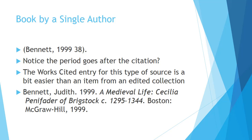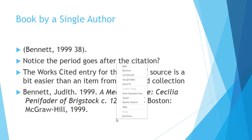The works cited entry for this type of source is a lot easier than for an item in an edited collection because there's only one author to deal with. So the works cited entry will look like this: Bennett, Judith — the author. Then the title in italics: A Medieval Life: Cecilia Pennyfarthing of Brickstock, circa 1295 to 1344. Then the place of publication, Boston. The publisher, McGraw-Hill. The year of publication, 1999. Where did I find that information? Let me show you.